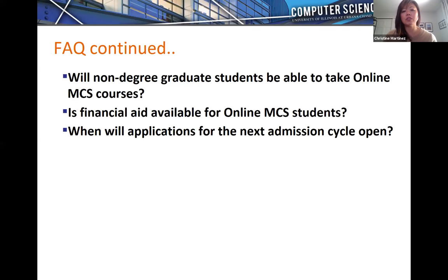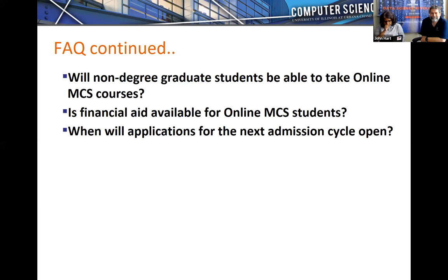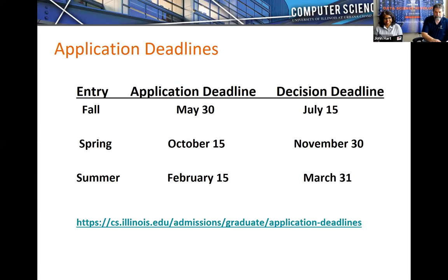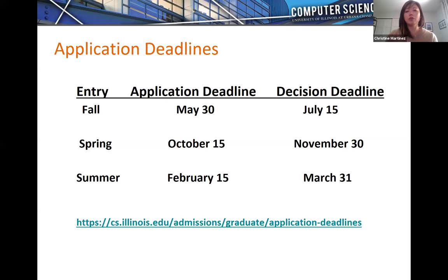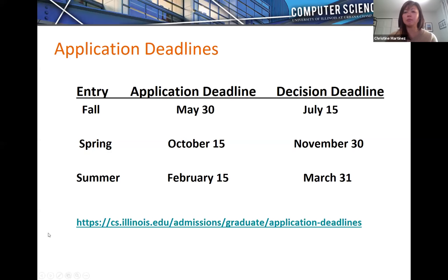When will applications for the next admission cycle open? We close applications on May 30th, then there will be about a two-to-three-week gap before spring 2020 applications open. If you start looking in late June, you should see spring applications open. Application deadlines are always posted on the program website, which also lists the entry point, when to submit the application, and when decisions will be announced.